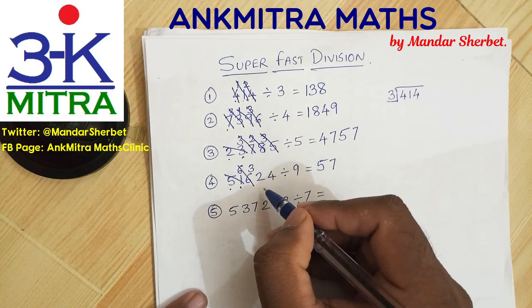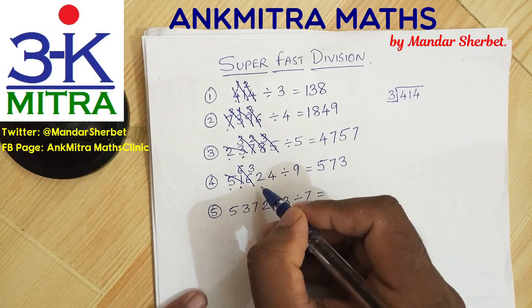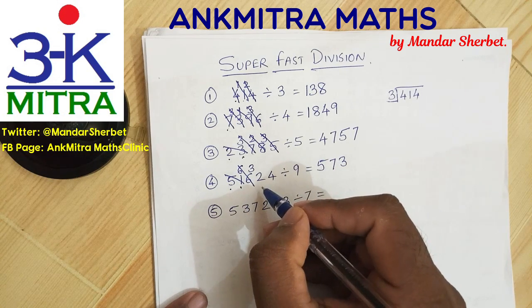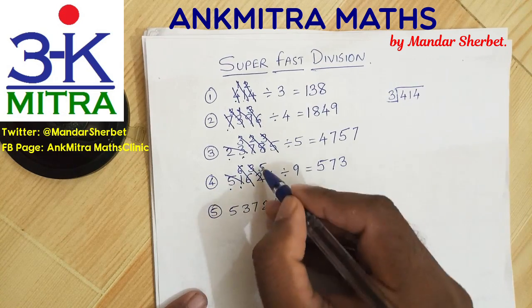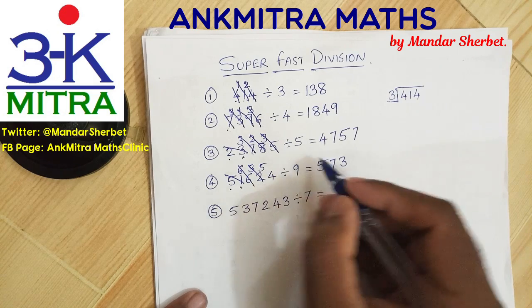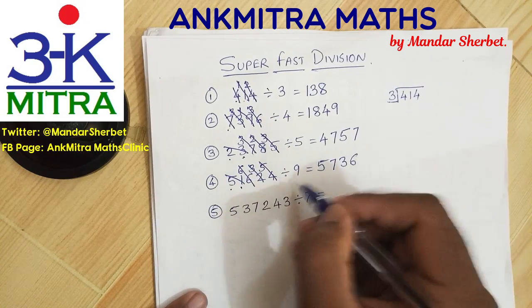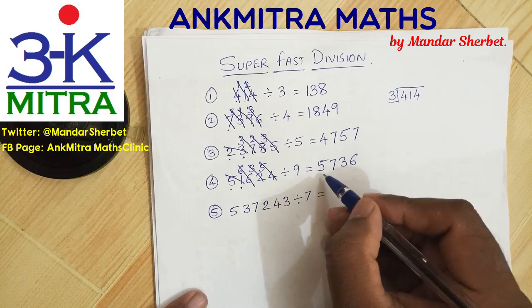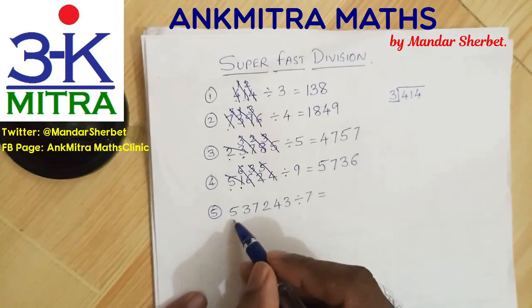7 times 9 is 63. Subtracting 63 from 66, what remains is 3. The next number is 32. 3 times 9 can be subtracted — write down 3. 3 times 9 is 27, subtracting from 32 leaves 5. The final number is 54, which is 6 times 9. The division is complete and the answer is 5736.